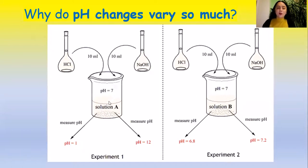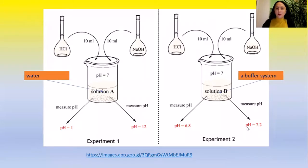The pH of solution A changes drastically, while the pH of solution B remains almost unchanged. Why? Is it a miracle? Of course not. Solution A is simply water, while solution B is a buffer system.